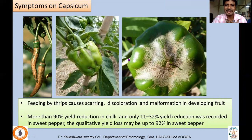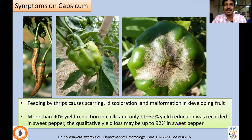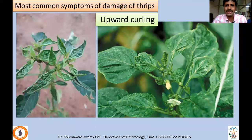Thrips damage: both nymphs and adults suck sap from leaf tissues and flower buds, causing upward curling. Tender shoots, buds, and flowers may be twisted and deformed; flower buds become brittle and drop, causing yield reduction. In capsicum, scarring, discoloration, and malformation of developing fruits occur, affecting market price. Over 90% yield reduction is reported in chili, and 11 to 32% in sweet pepper.